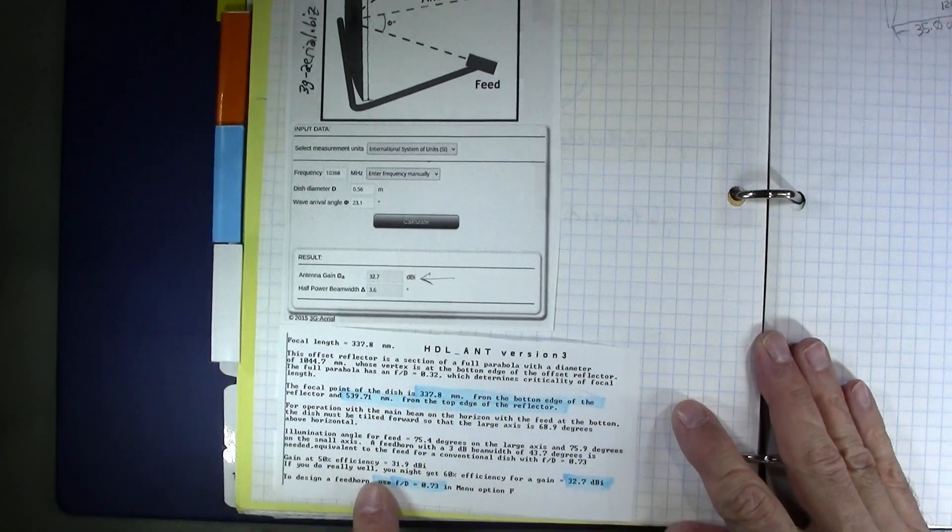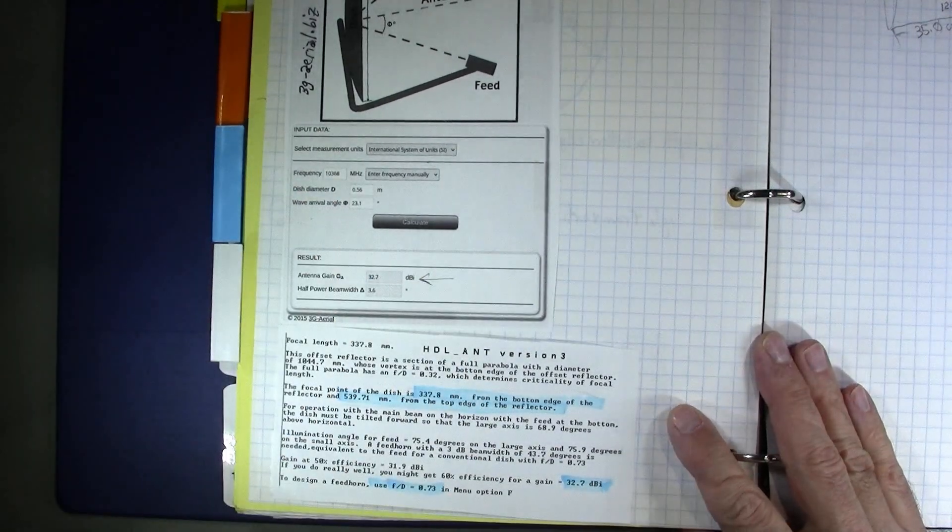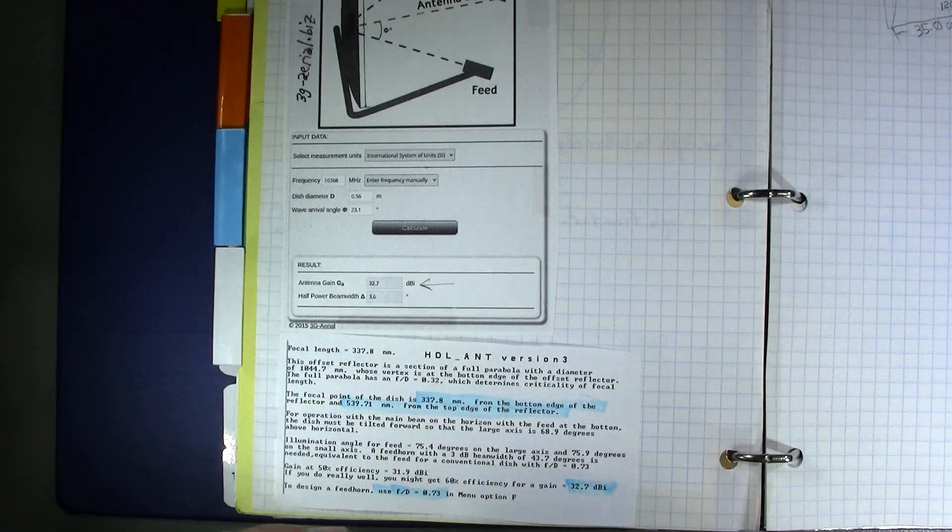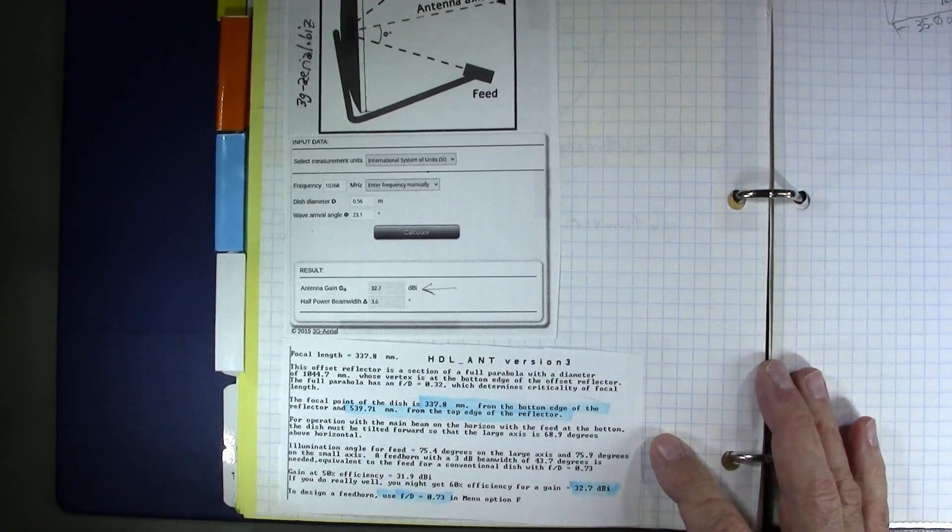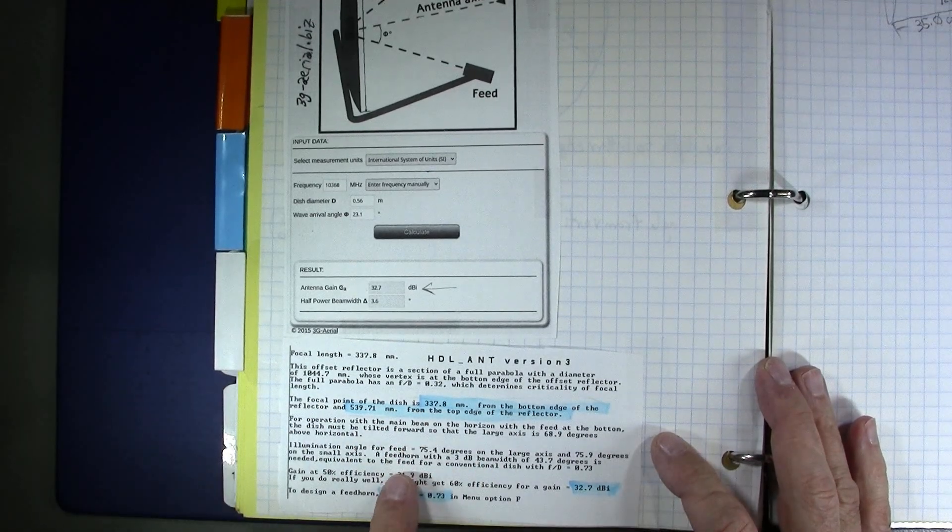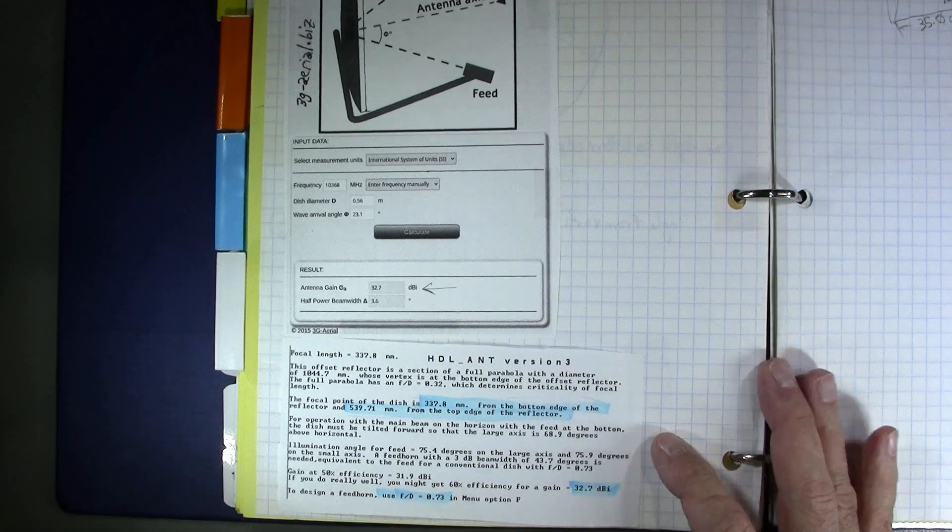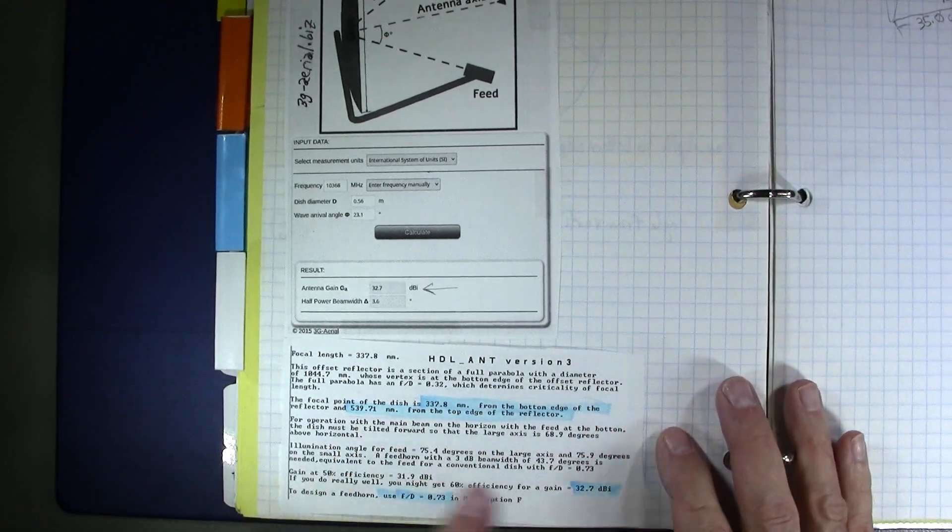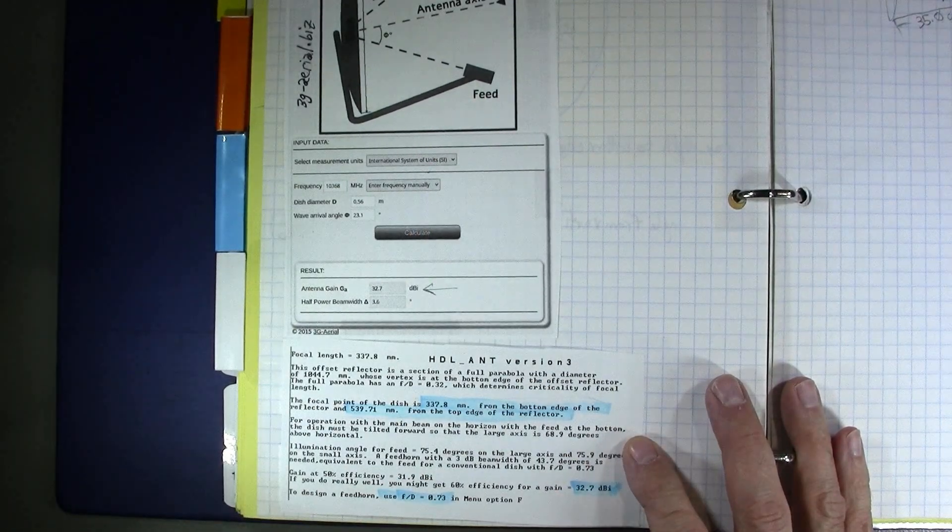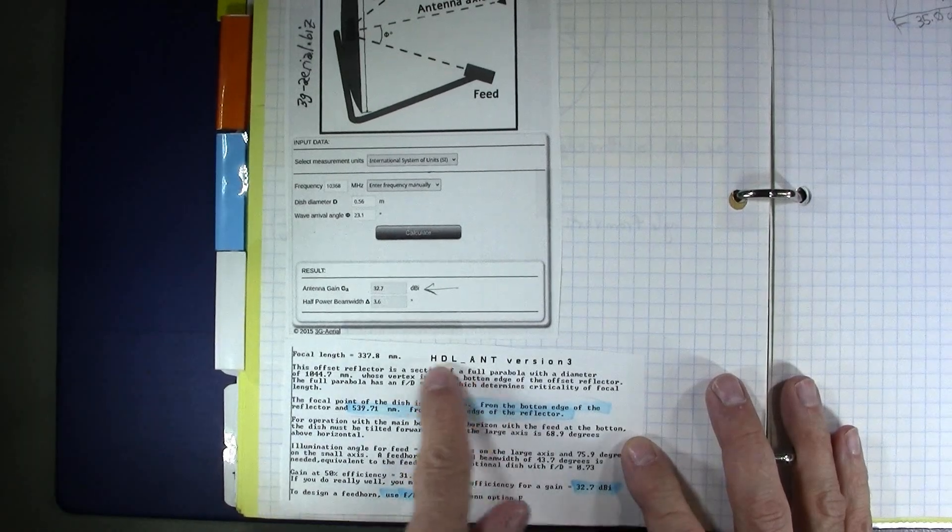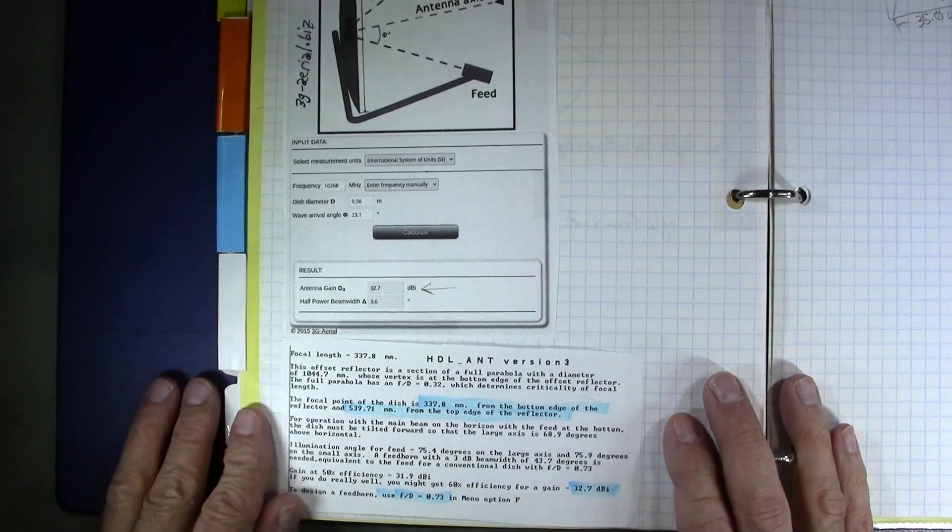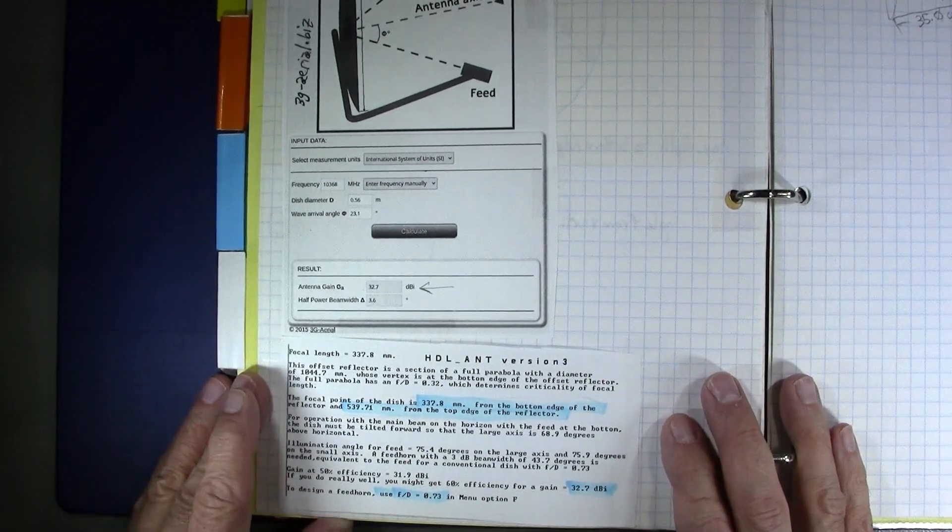And finally, this tool tells us that for our dish, we should use an F to D ratio of 0.73 in the design of the horn, which this tool is going to design for us. And in the next video, I will show you the horn that I designed. I'll give you more details of its design a little later. But the horn, so the feed point for this dish that I'm going to be using, I designed it with this tool, HDL Ant, available from Paul's website, w1ghz.org.